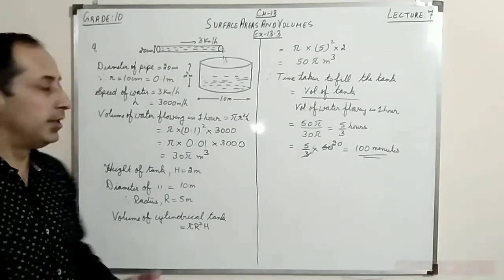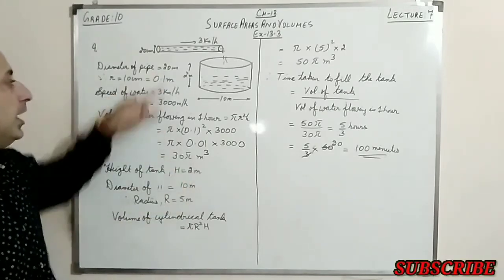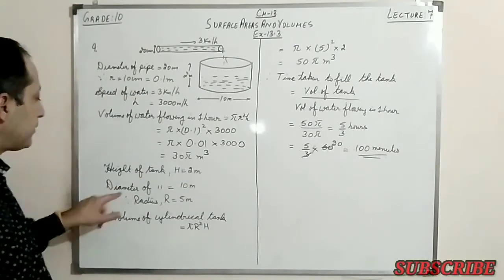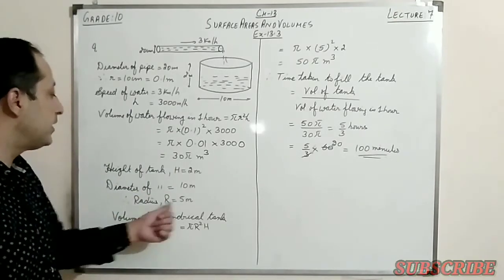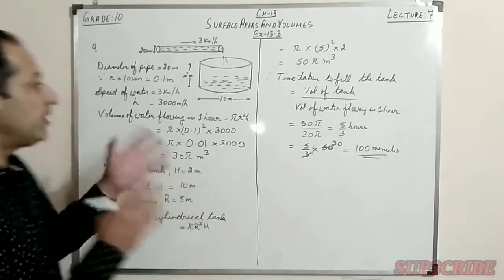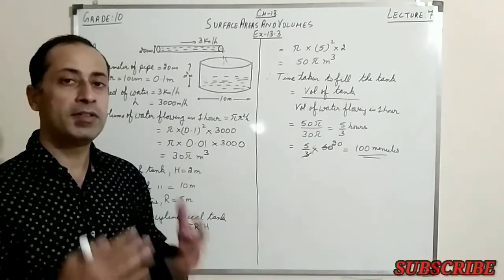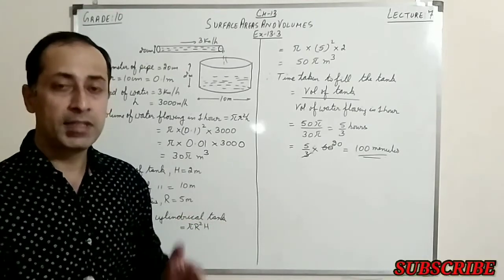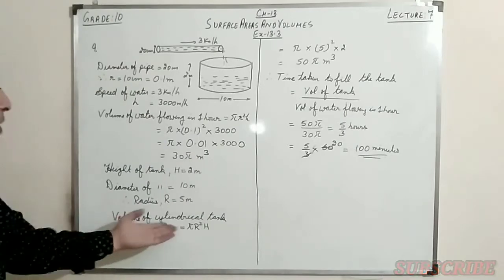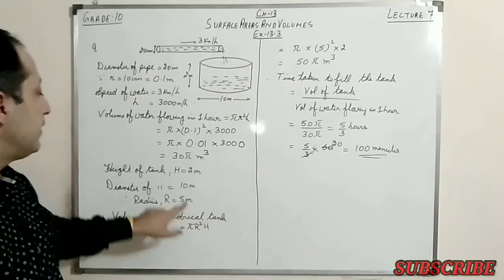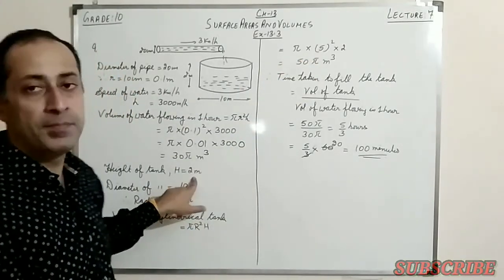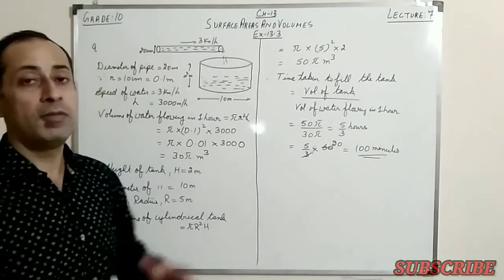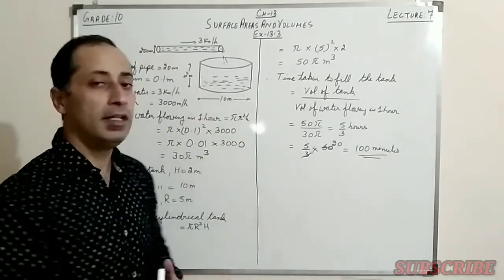Now for the tank: height H = 2 meters, radius R = 5 meters. Volume of the cylindrical tank = πR²H = π × 5² × 2 = 50π m³. This is the total volume of water that can be collected in the cylindrical tank.